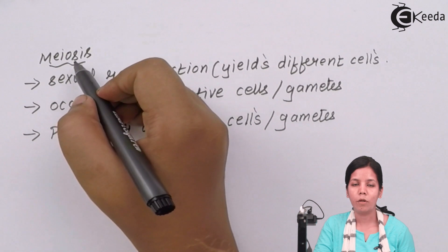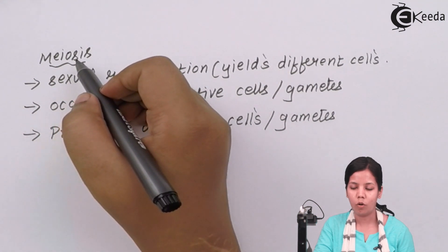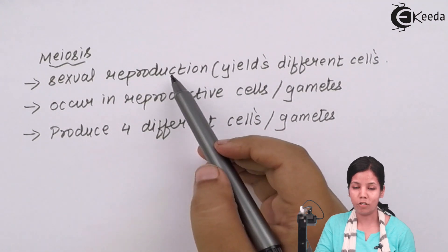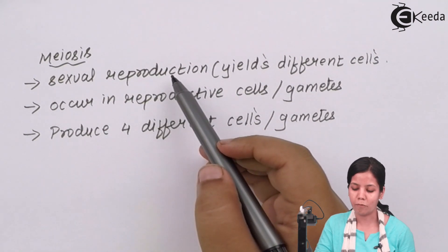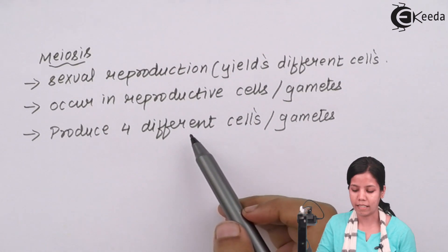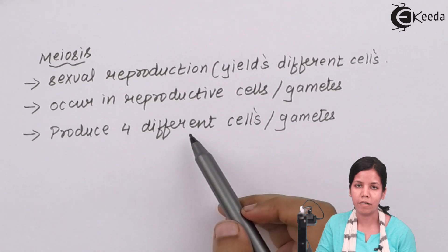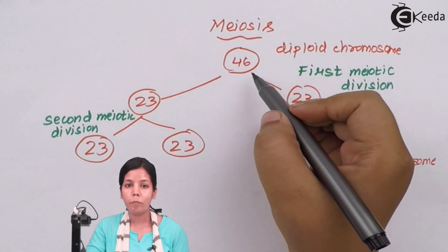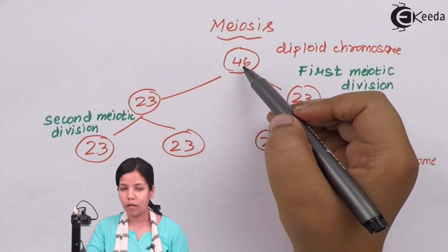Meiosis is nothing but reduction division. During meiosis, the diploid number of chromosomes becomes haploid, or half. Meiosis basically takes place during sexual reproduction or when gametes are formed. It occurs in gametes — that is, the male sperm and the female egg cell — and four different types of gametes or daughter cells are formed during the process of meiosis.